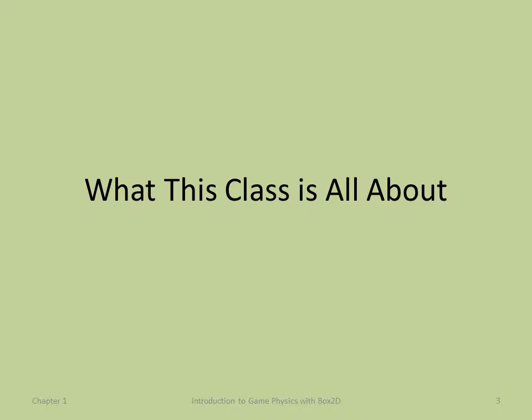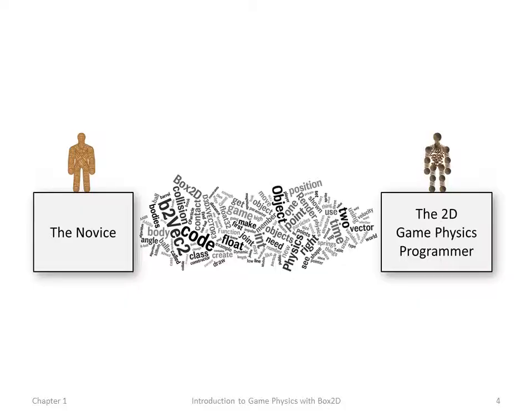What this class is all about: Game Physics. Here you are, the novice, over on the left. Over on the right, we have the fully trained 2D Game Physics Programmer. You want to get from left to right. In the middle, if you Google 'Game Physics', you'll find all kinds of stuff — not particularly well organized. Some of it's really good, some really bad, and it's hard to integrate everything into an organized set of knowledge.